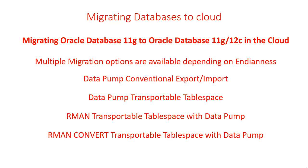RMAN Convert Transportable Tablespace with Data Pump is another option. This method can be used only if the database character sets are compatible — we'll cover character sets more during the lab. This method is similar to the Data Pump Transportable Tablespace method, with the addition of the RMAN convert command to enable transport between platforms with different endianness. This is the only option you would use when you have a different endian format — whether big-endian or little-endian.